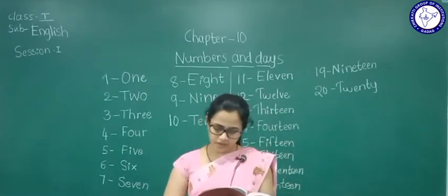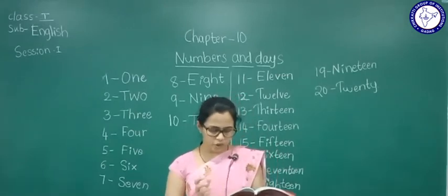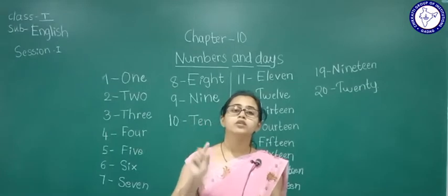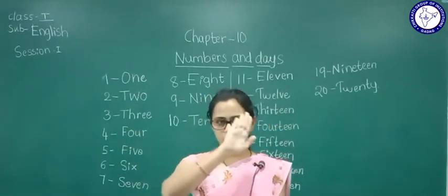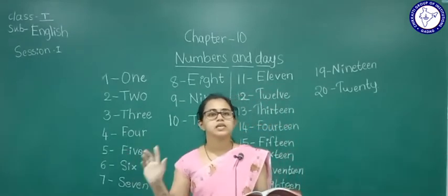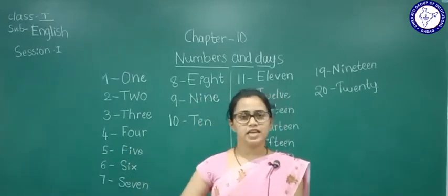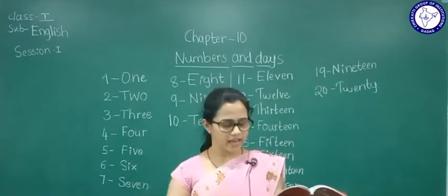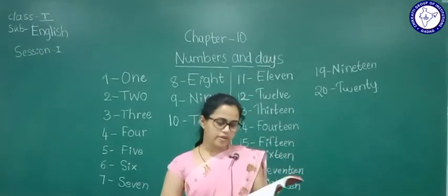We already know this, right. 1, 2, buckle my shoe. 3, 4, shut the door. 5, 6, pick up the sticks. 7, 8, lay them straight. 9, 10, big fat hen. Count and write.